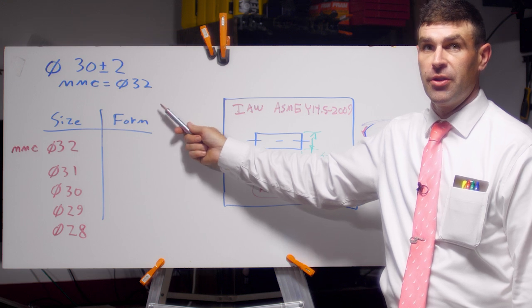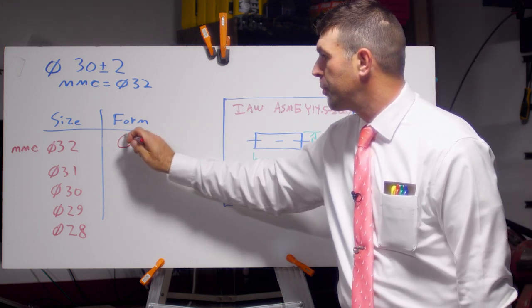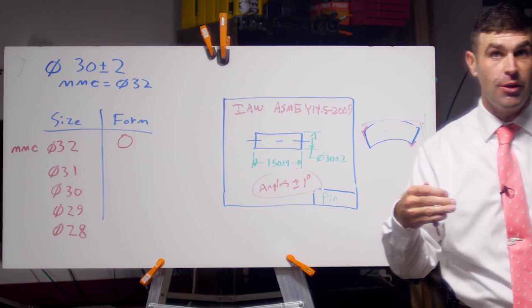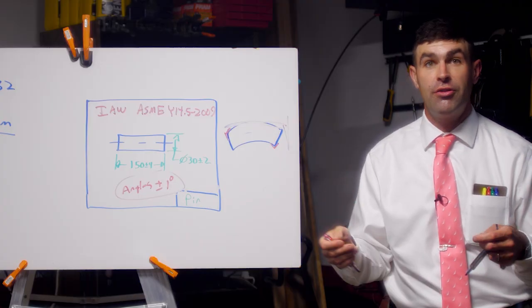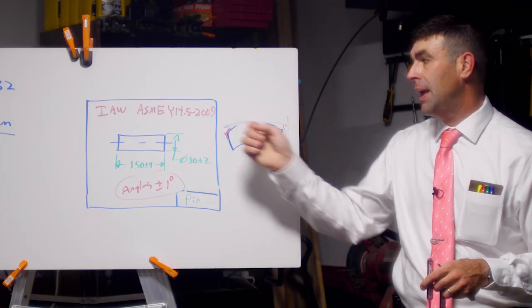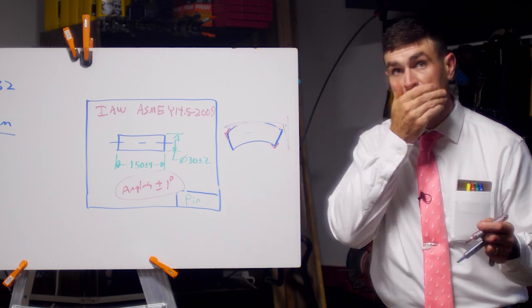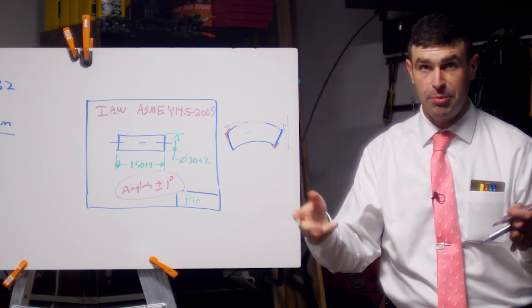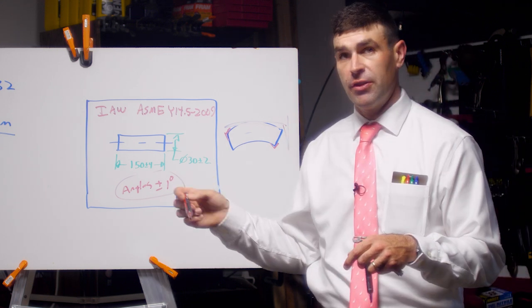So what I want to show next is this handy chart. I'll read the definition in a minute, but I want to show the chart first. I think it's easier to understand. We've got to have perfect form at this maximum material condition, 32 millimeters in our case. So if the form is perfect, we're going to allow zero form variation, which means that this pin needs to come out perfect, a perfect cylinder.